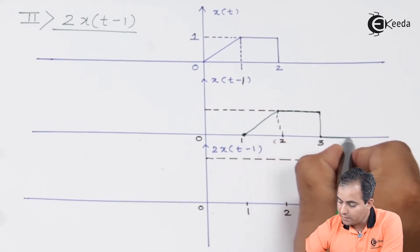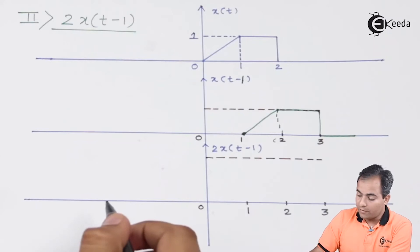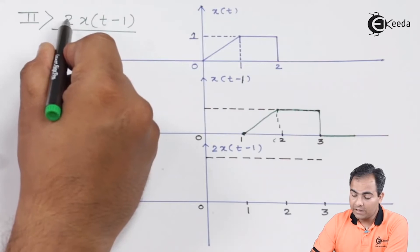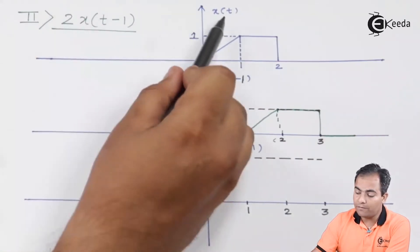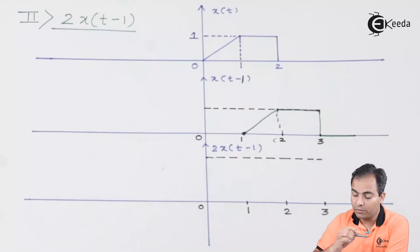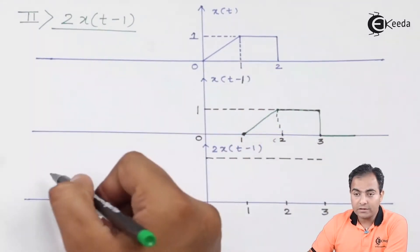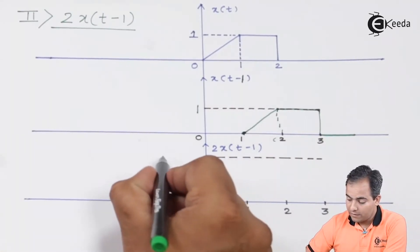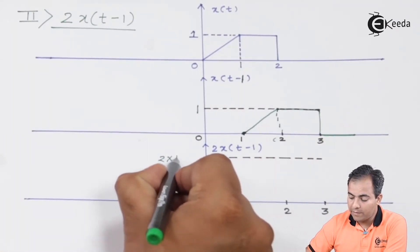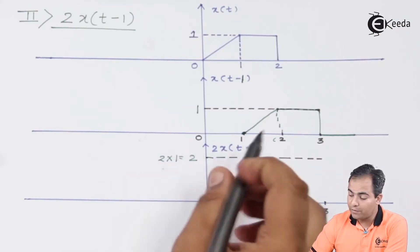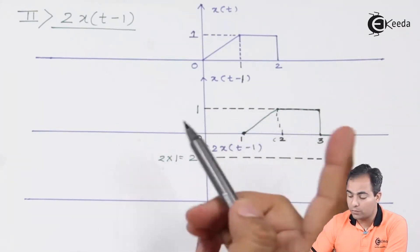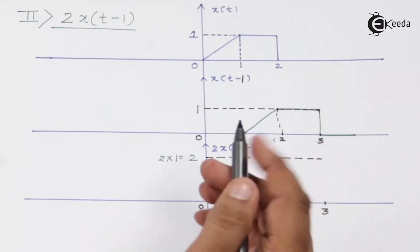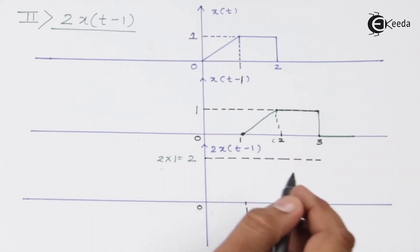Next we perform amplitude scaling — multiply the whole result by 2. The previous amplitude was 1; now it is multiplied by 2 to give 2. This means the new amplitude for the whole graph is 2. The time instances are not affected; only the amplitudes are increased.